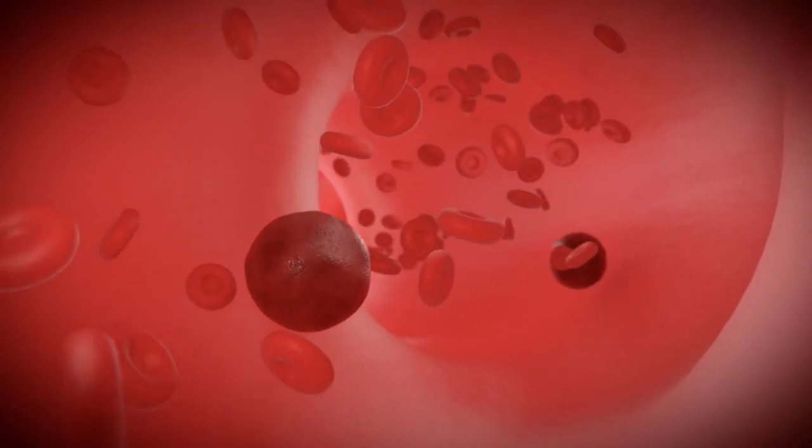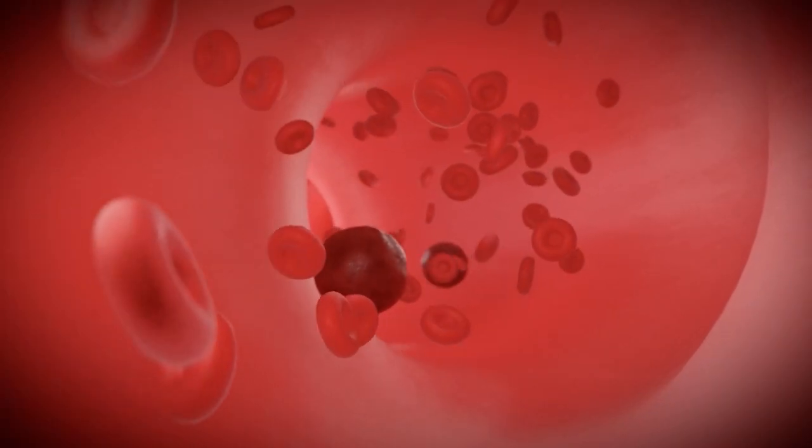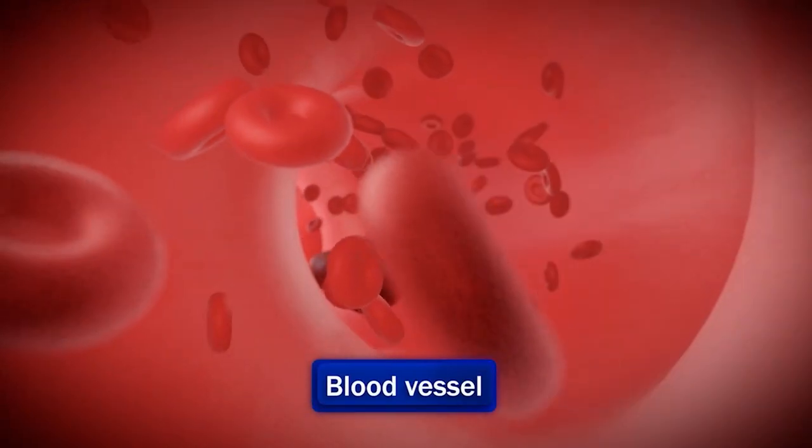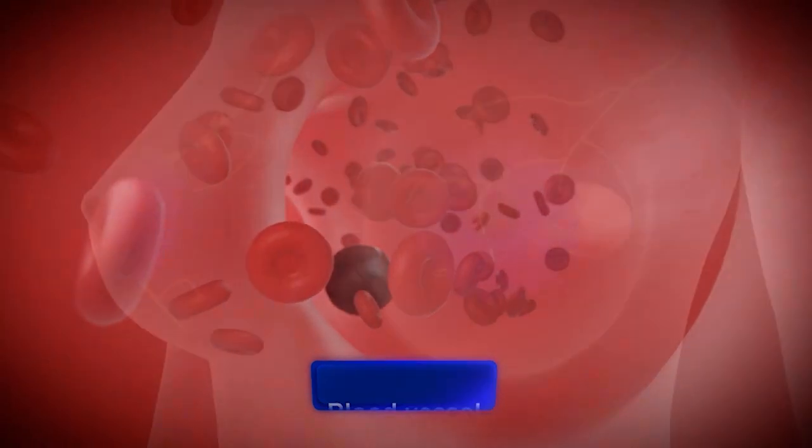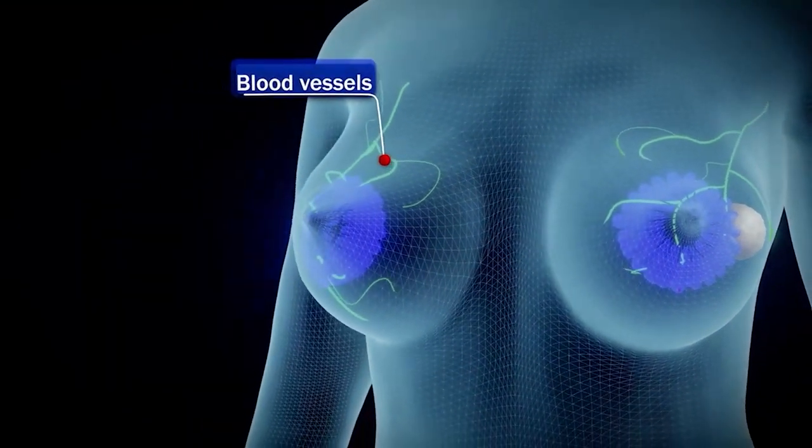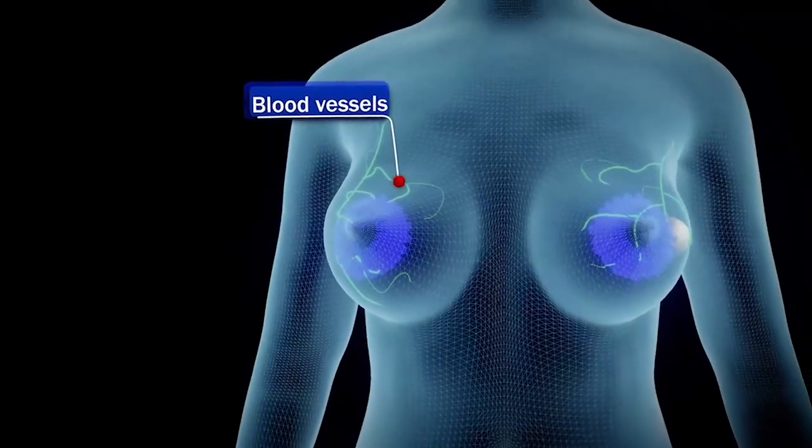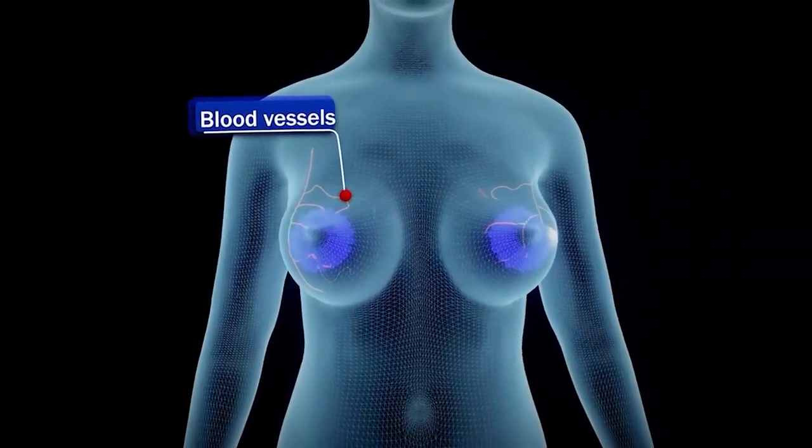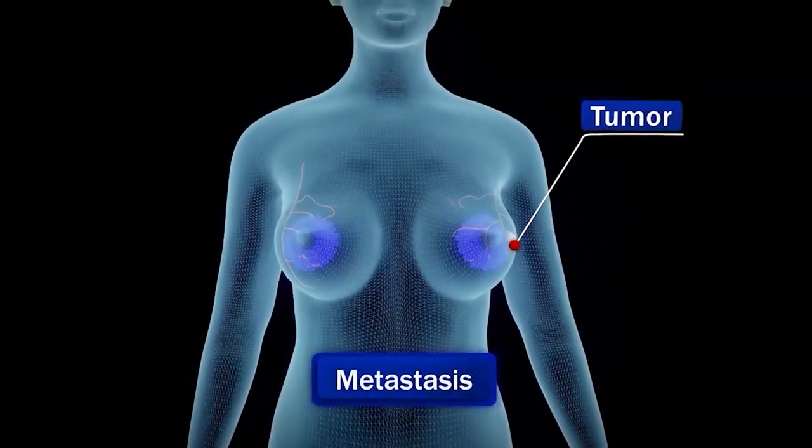Because cancer cells don't stick as well as normal cells, they can break off and enter a nearby blood vessel. Cancer cells in the blood vessels can travel to other areas of the body and form additional tumors. This is called metastasis.